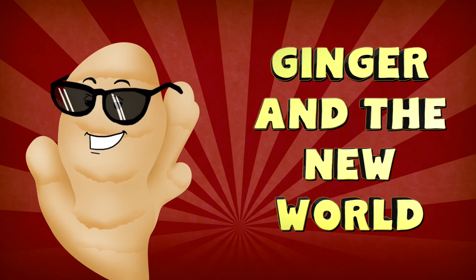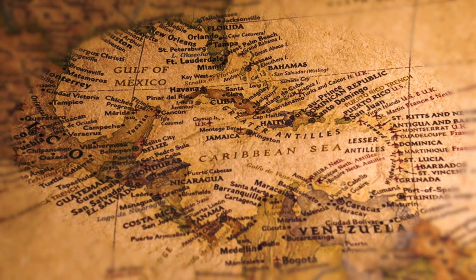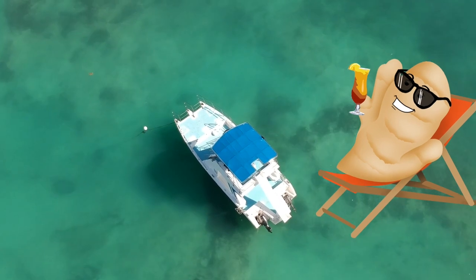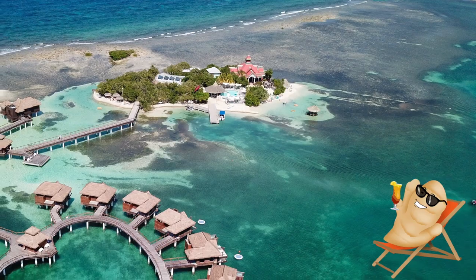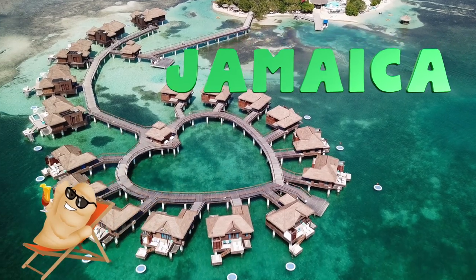Ginger and the New World. Spanish explorers brought ginger along with them to the Caribbean islands, where ginger felt right at home in the tropical wonderland. And a massive ginger crop ended up being established in Jamaica. From there, ginger made its way to the rest of North and South America with relative ease.